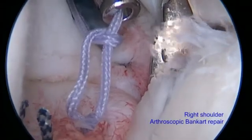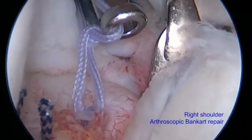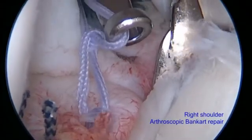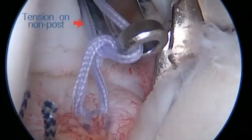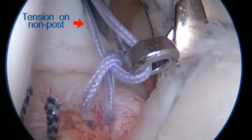Clip showing arthroscopic Bankart repair of the right shoulder using alternate half-hitch knot delivered sideways down with tension on the non-post or the orange limb.